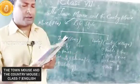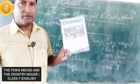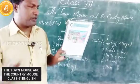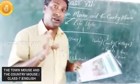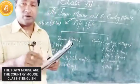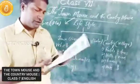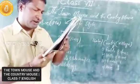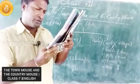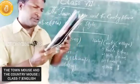So now Unit One — the title is 'The Town Mouse and the Country Mouse.' Look at the picture. First you have to observe the picture, then we go into the lesson. What do you observe in this picture? Notice the differences between the two scenes shown.